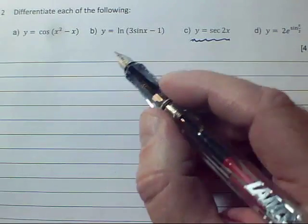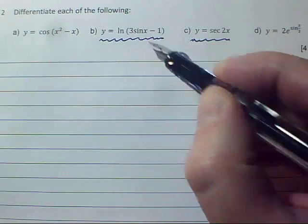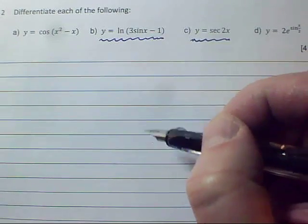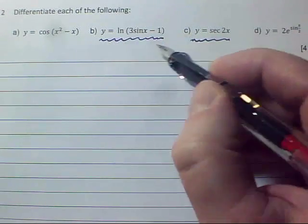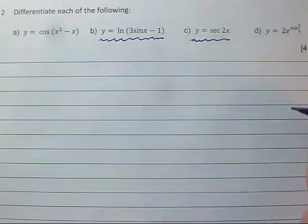This one here where the outside function is a log - you may have a special rule for dealing with differentiating a log. There's always a similar pattern there.